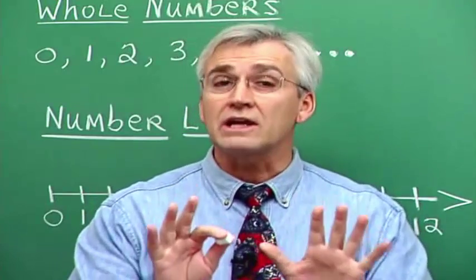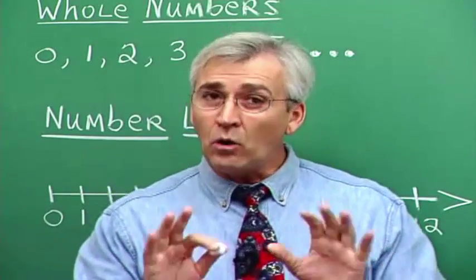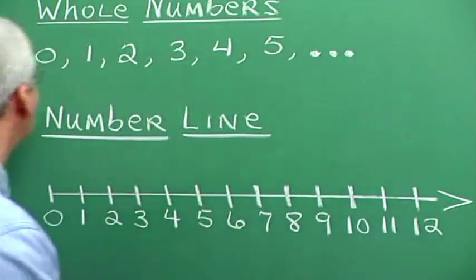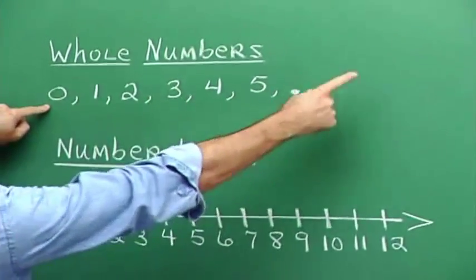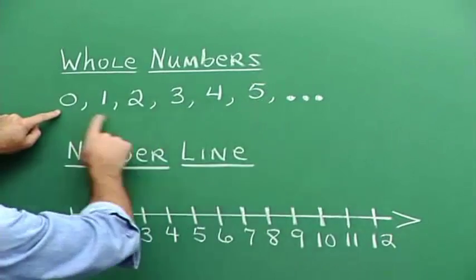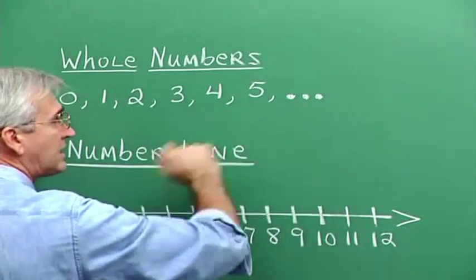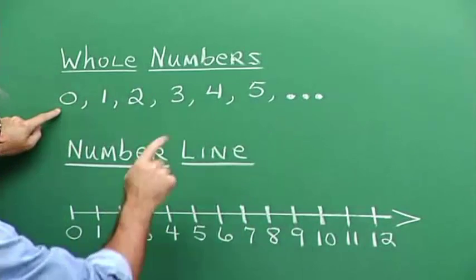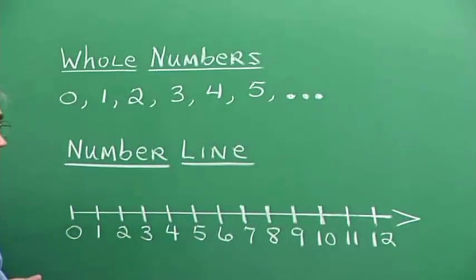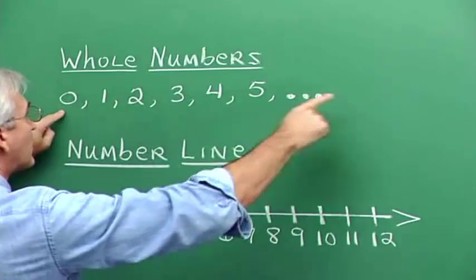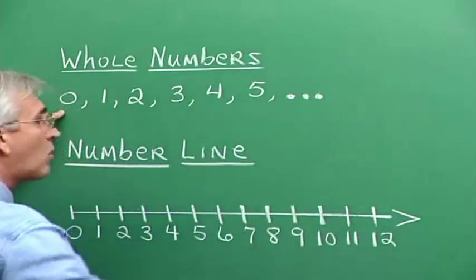We're going to start here with the notion of whole numbers. And whole numbers are listed here. Notice that these are just zero and we're just counting up our number system: zero, one, two, three, four, five. The dot dot dot means 'and so on in the pattern that has been established.' So there are an infinite number of whole numbers — this pattern just continues forever more.